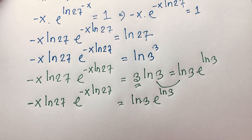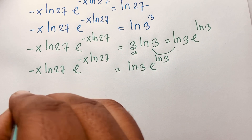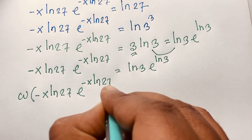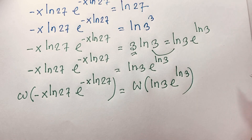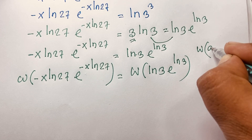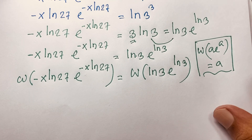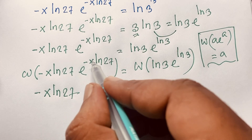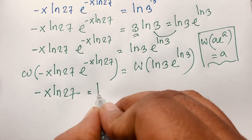Now I apply the Lambert W function to both sides. Using the property W(a · e^a) = a, we get: W[(-x·ln27) · e^(-x·ln27)] = W[ln3 · e^(ln3)]. Therefore -x·ln27 = ln3.